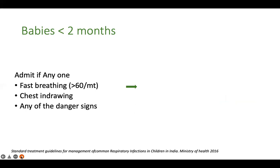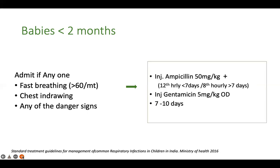What about babies less than two months? Smaller babies are more at risk of severe infection and mortality. Therefore, in this subgroup, any form of pneumonia is taken as severe pneumonia and they are admitted - whether they have chest indrawing, tachypnea more than 60/min, or any danger signs. All cases of pneumonia in children less than two months require admission and parenteral treatment with ampicillin and gentamicin for seven to ten days. The gentamicin dose here is slightly lower: 5 mg/kg once daily.